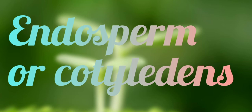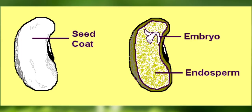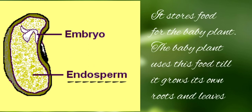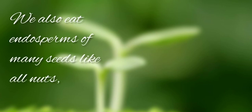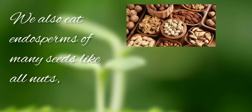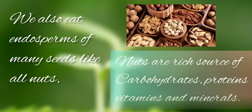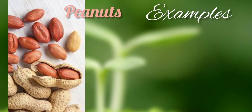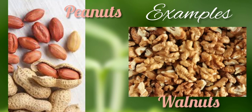Second, endosperm or cotyledons. Under the seed coat is the endosperm, which occupies the maximum part of a seed. It stores food for the baby plant. The baby plant uses this food until it grows its own roots and leaves. We also eat the endosperms of many seeds like all nuts, as they are a rich source of carbohydrates, protein, vitamins, and minerals — for example, peanuts and walnuts. Look at the picture — these are seeds we eat.